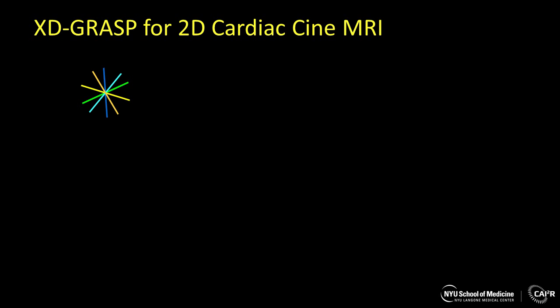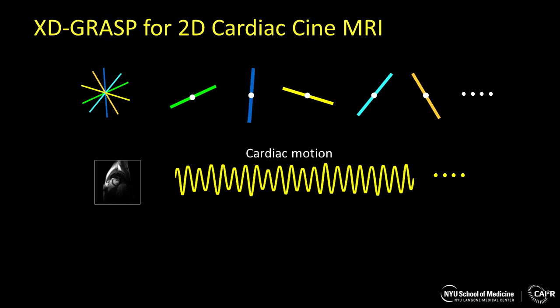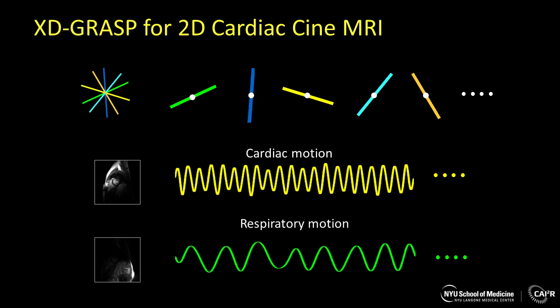In the next application, let's see XTGRASP for 2D cardiac cine MRI. Here, we are using a 2D golden angle radial sampling, and we can detect the motion signal from the center of k-space. Based on the fact that we are using multiple coils for data acquisition and the frequencies of cardiac motion and respiratory motion are different, we can detect the cardiac motion from a coil element that is close to the heart, and detect the respiratory motion from a coil element that is close to the diaphragm.